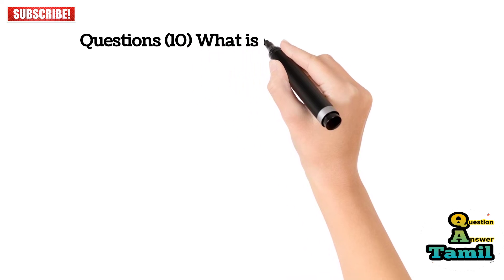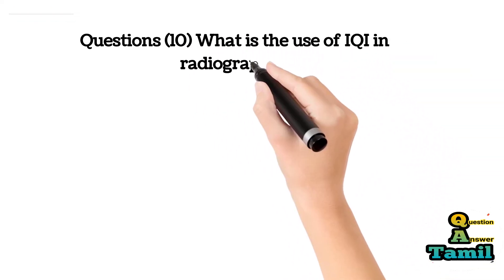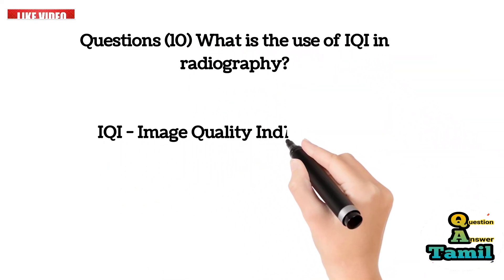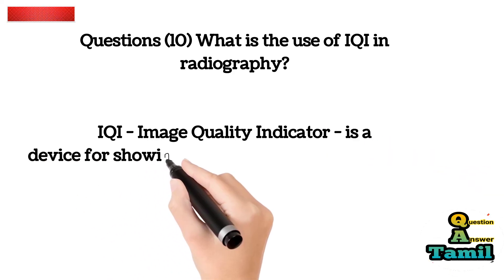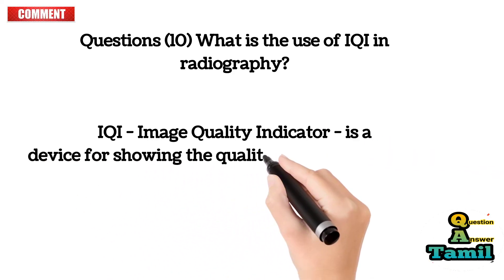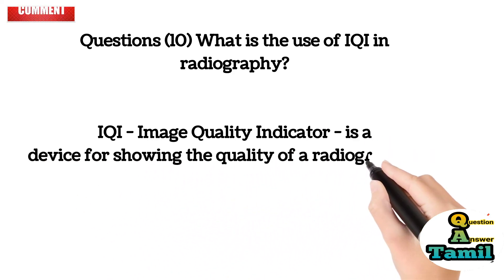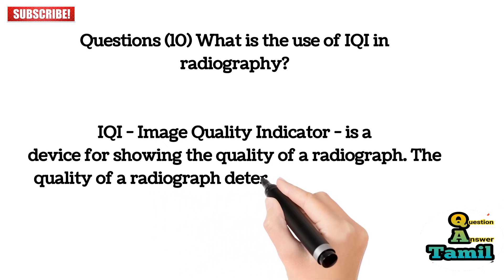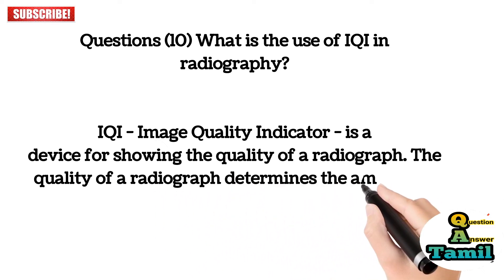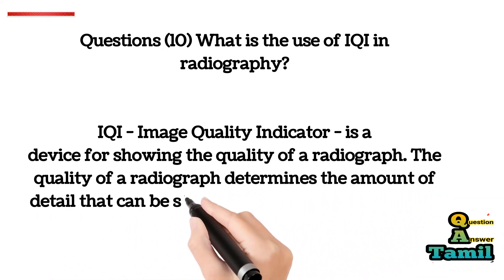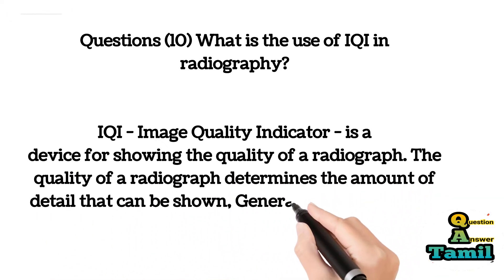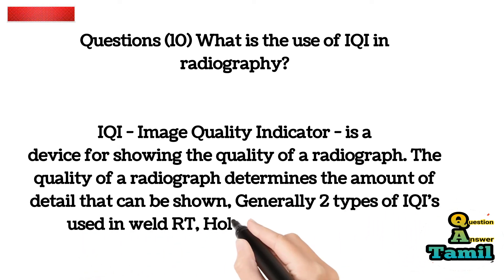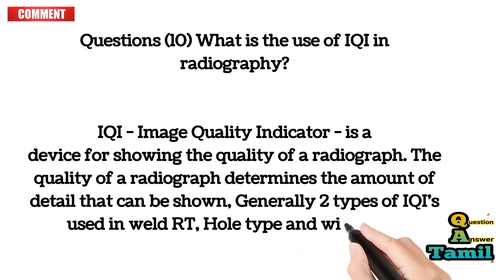Question 10: What is the use of IQI in radiography? An IQI (image quality indicator) is a device for showing the quality of a radiograph. The quality of a radiograph determines the amount of detail that can be shown. Generally, two types of IQI are used in weld RT: hole type and wire type.